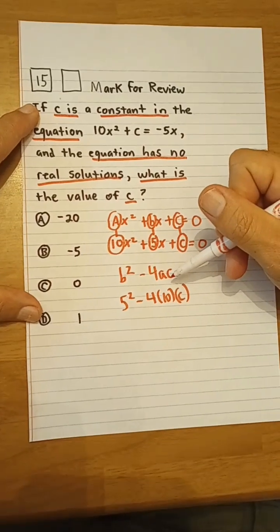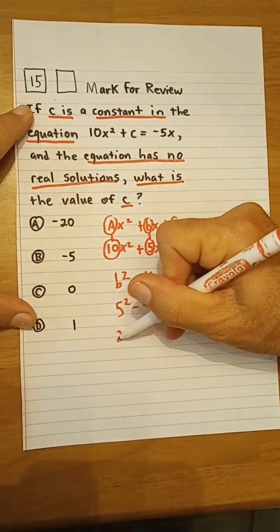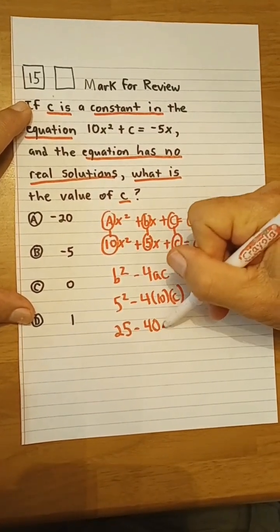And this has to be, again, negative. Here this would be 25 minus 40c.